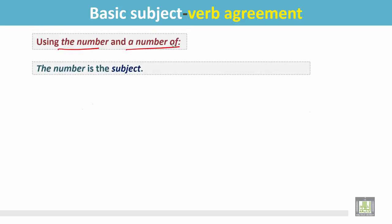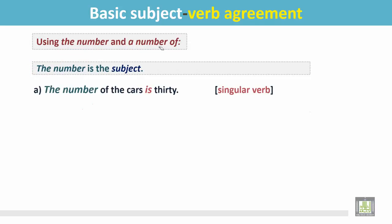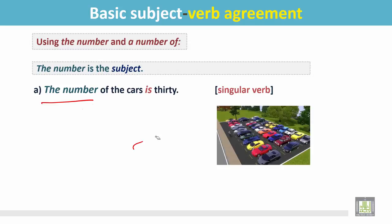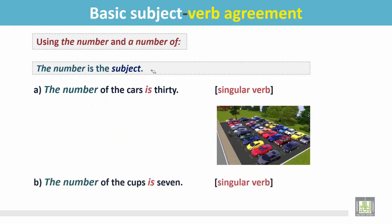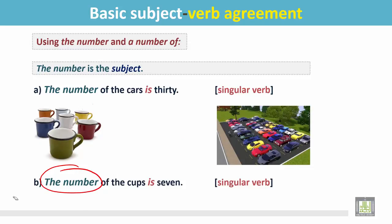When 'the number' is the subject, see the example: 'The number of the cars is 30.' In this picture we see there are many cars, but the subject is 'the number,' which is a singular subject, so the verb is singular. Though there are more than 30 cars, the verb is still singular. Another example: 'The number of the cups is 7.' The subject is 'the number' — it is a singular subject, so the verb is singular.